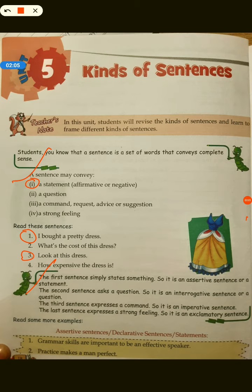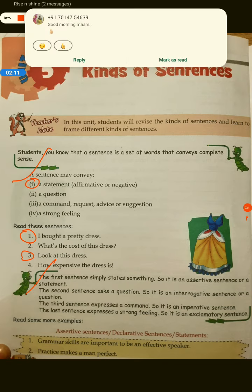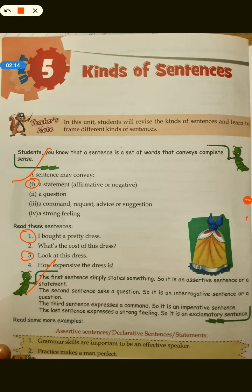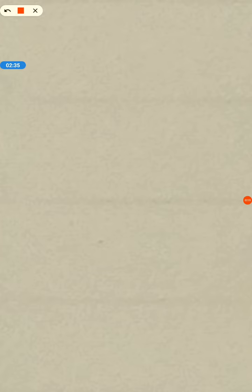Fourth: 'How expensive the dress is!' - it's a strong emotional feeling, so it will be an exclamatory sentence. Now I will again make that chart and show you the key concepts about sentences. You will do the same in your own books and then you will send it to me as homework.